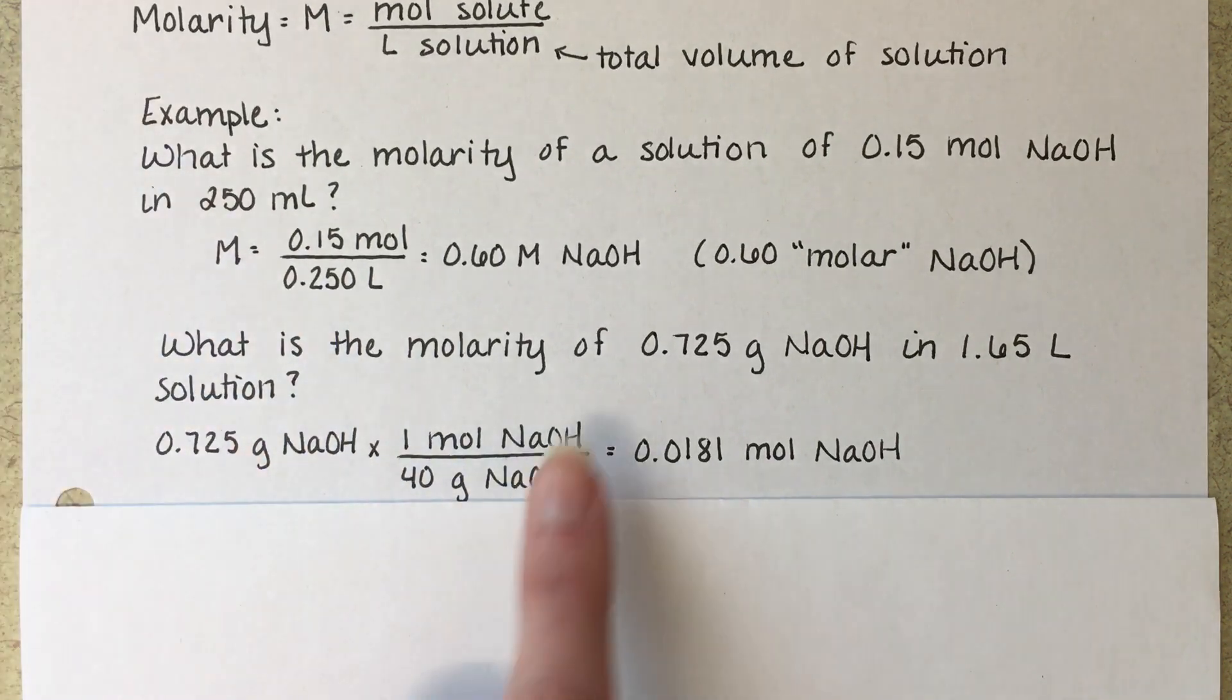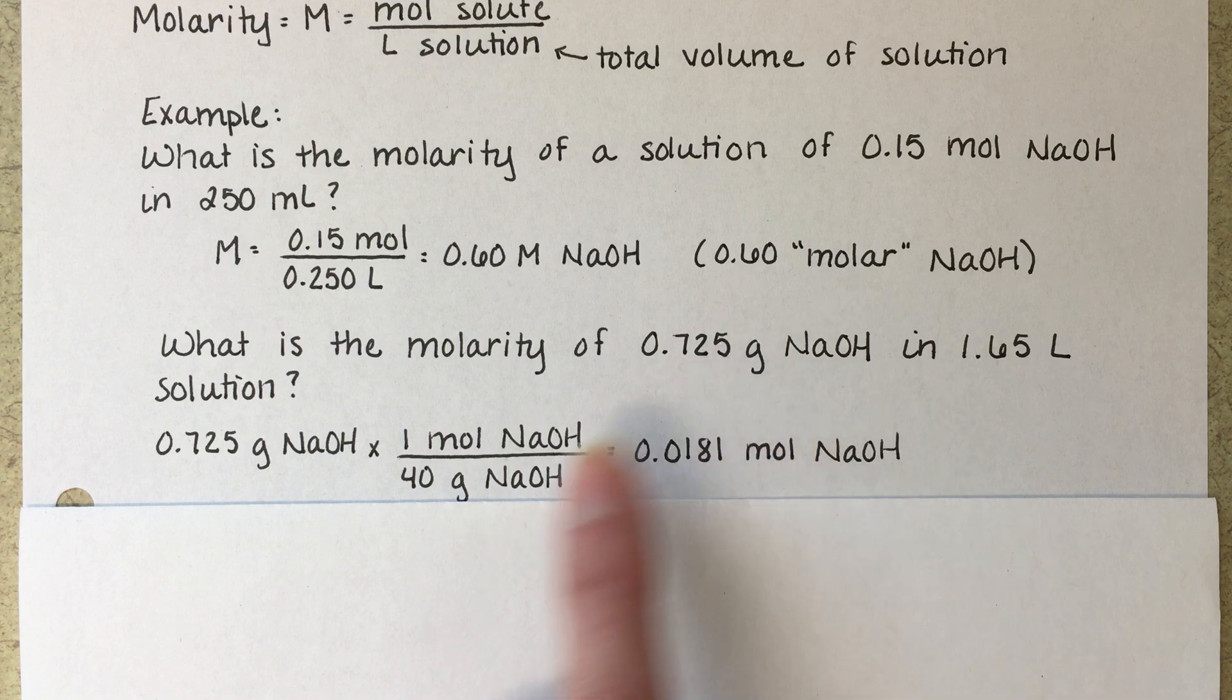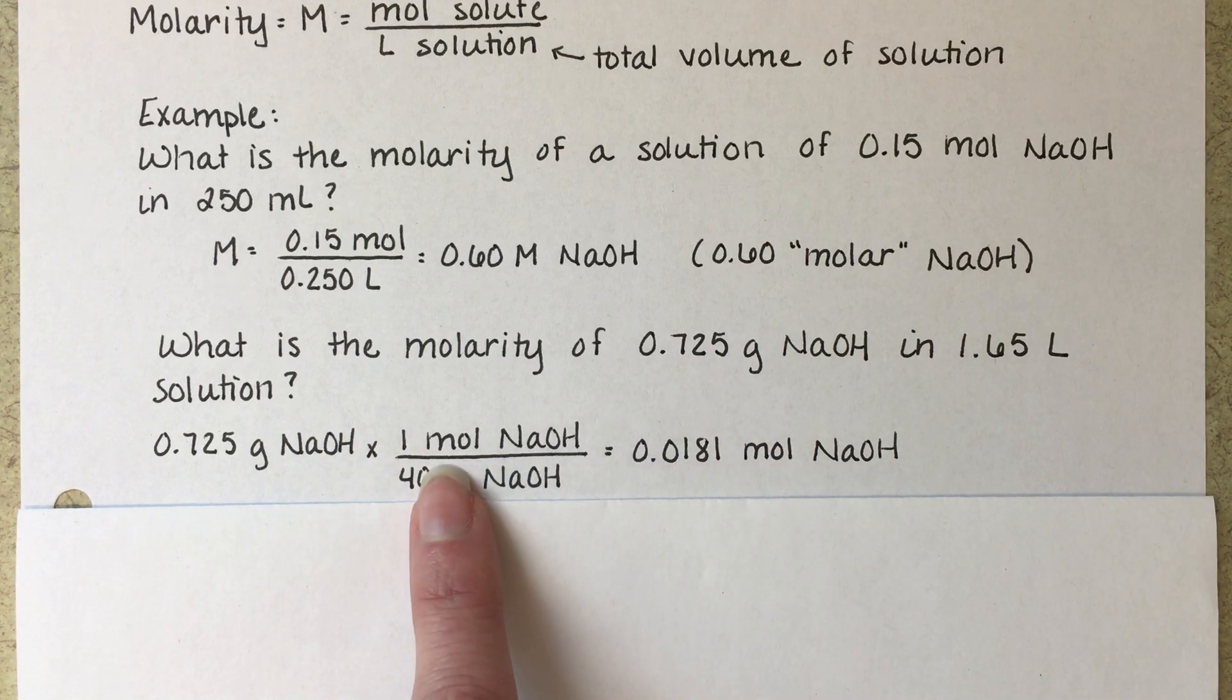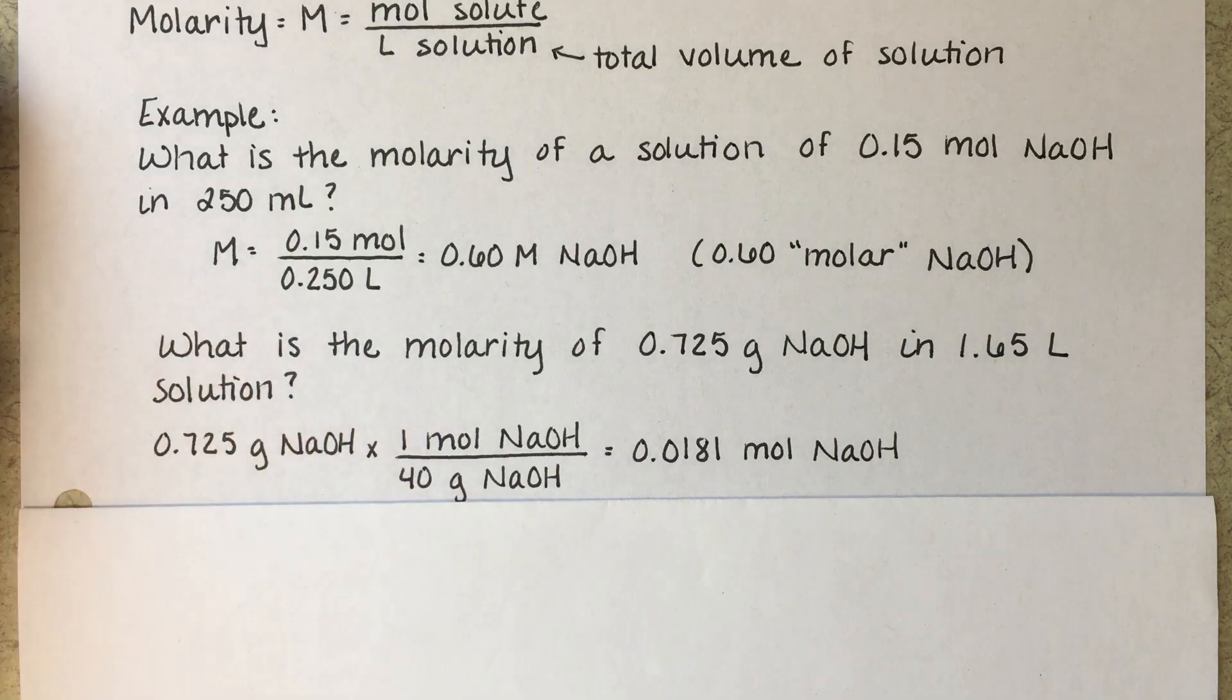So for this problem, where we are told the amount of solute is 0.725 grams, our first job is to figure out how many moles that is, dividing by the molecular weight of NaOH.